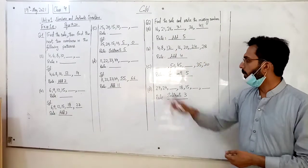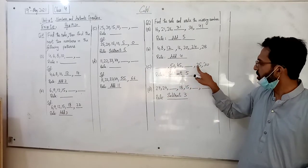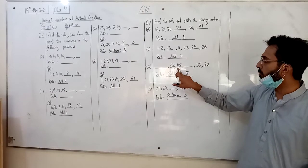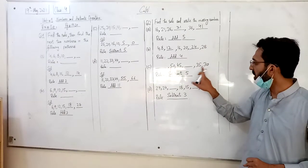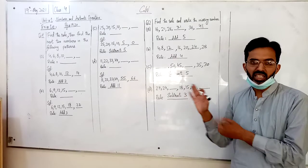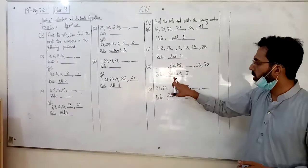C part. देखे. 50, 45, 35, 30. आप देखे, इसमें देखे 5 minus हो रहा है, पर इसमें भी देखे 5 ही minus हो रहा है. तो इसका मतलब आपको rule पता चल गया. 55. आपको minus हो रहा है. जो rule क्या होगा? Subject 5.